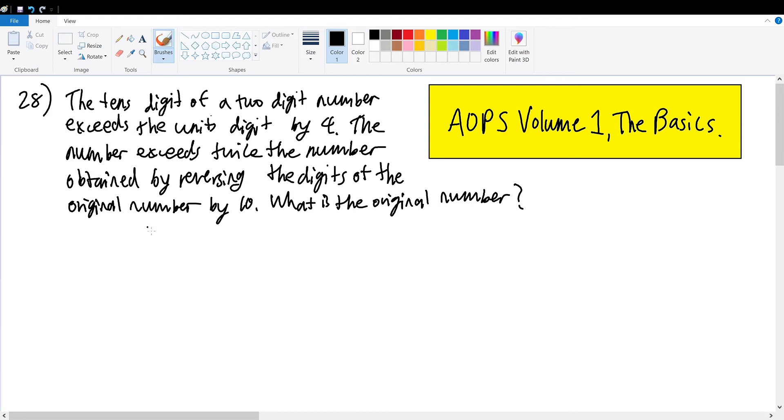When reading word problems like these, we must understand the given circumstances. We are told that the tenth digit of a two-digit number - let's suppose the two digits be t and u, t standing for tens digit and u being units digit - exceeds the units digit by 4. So that means t minus u must equal 4.